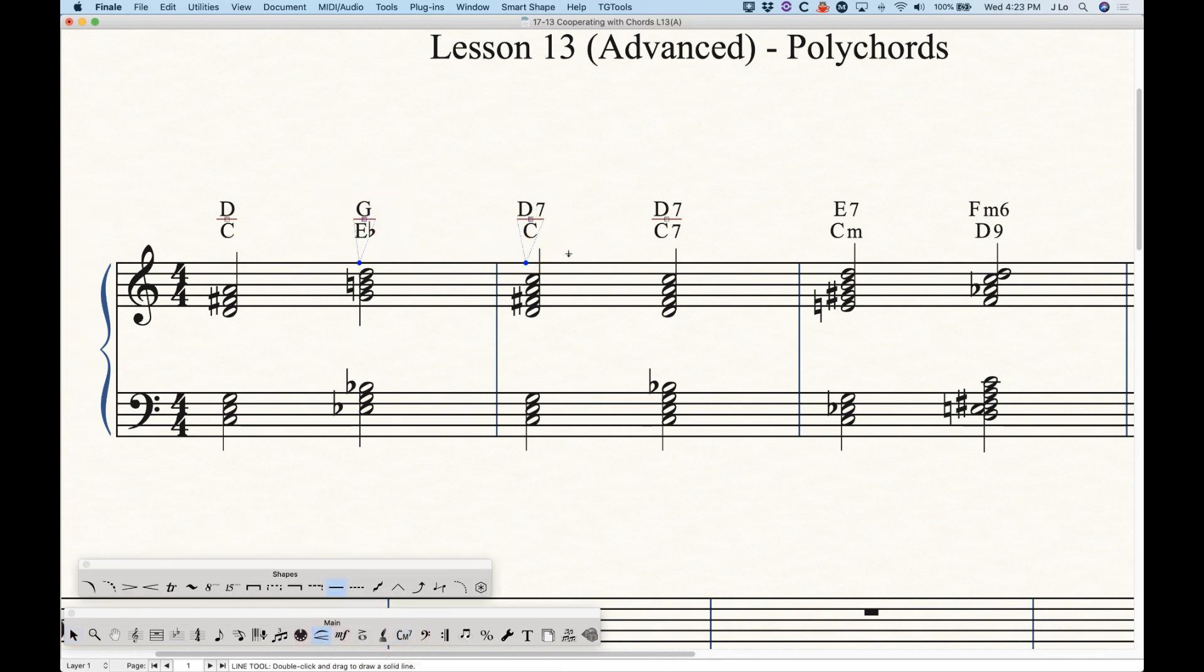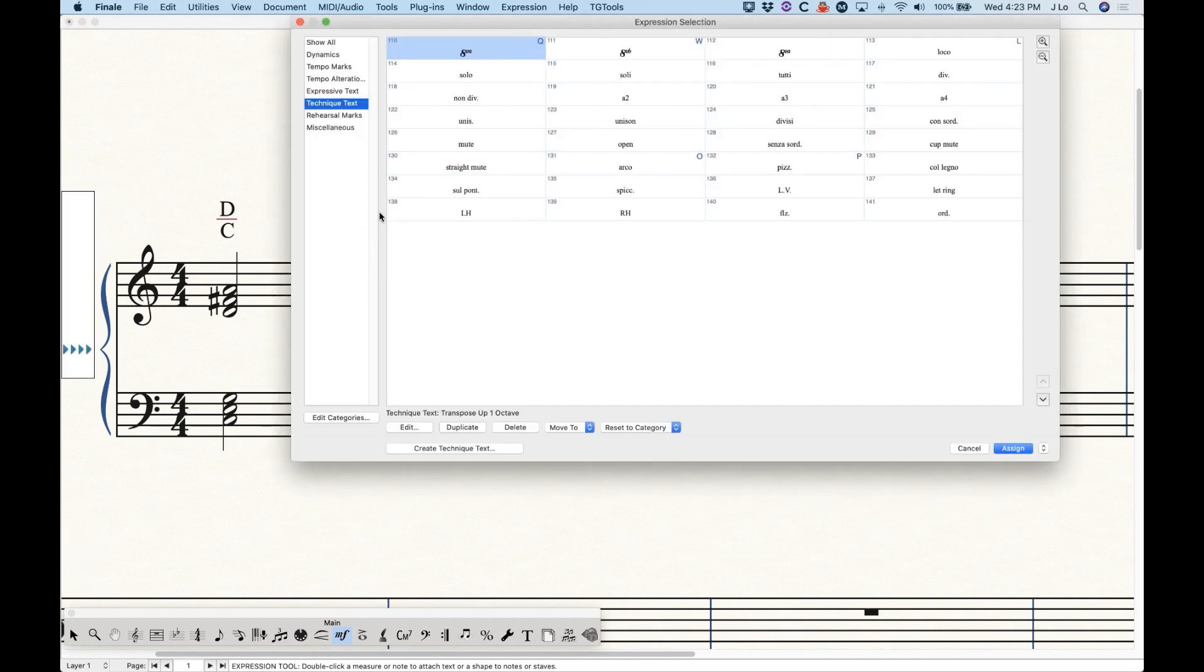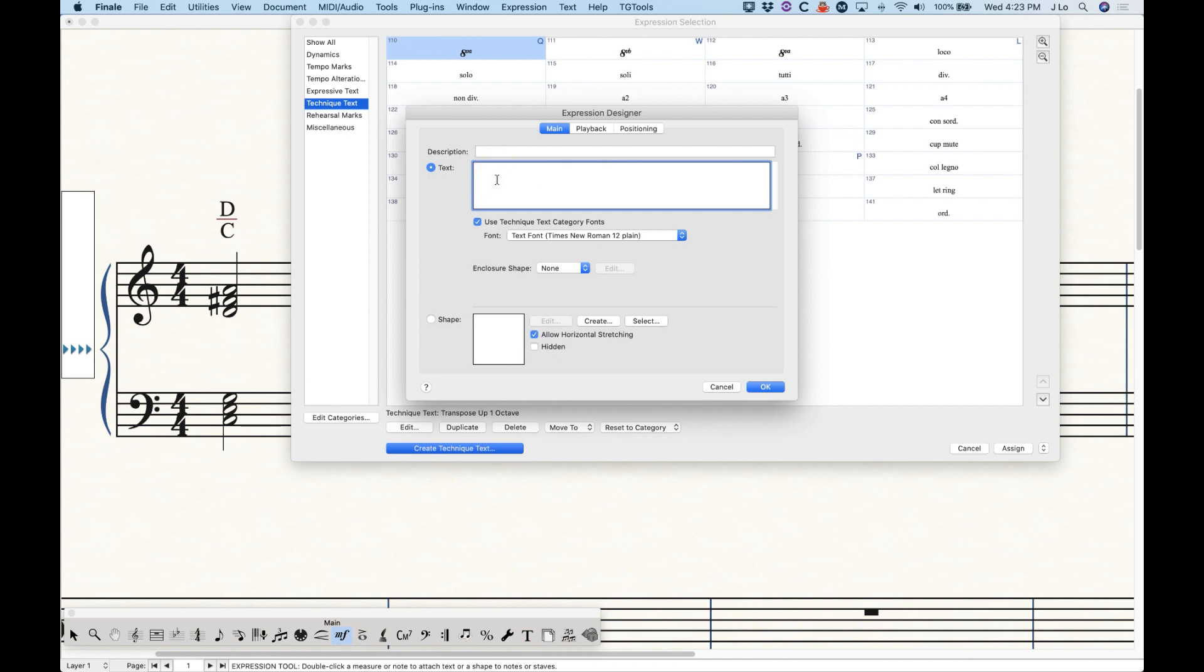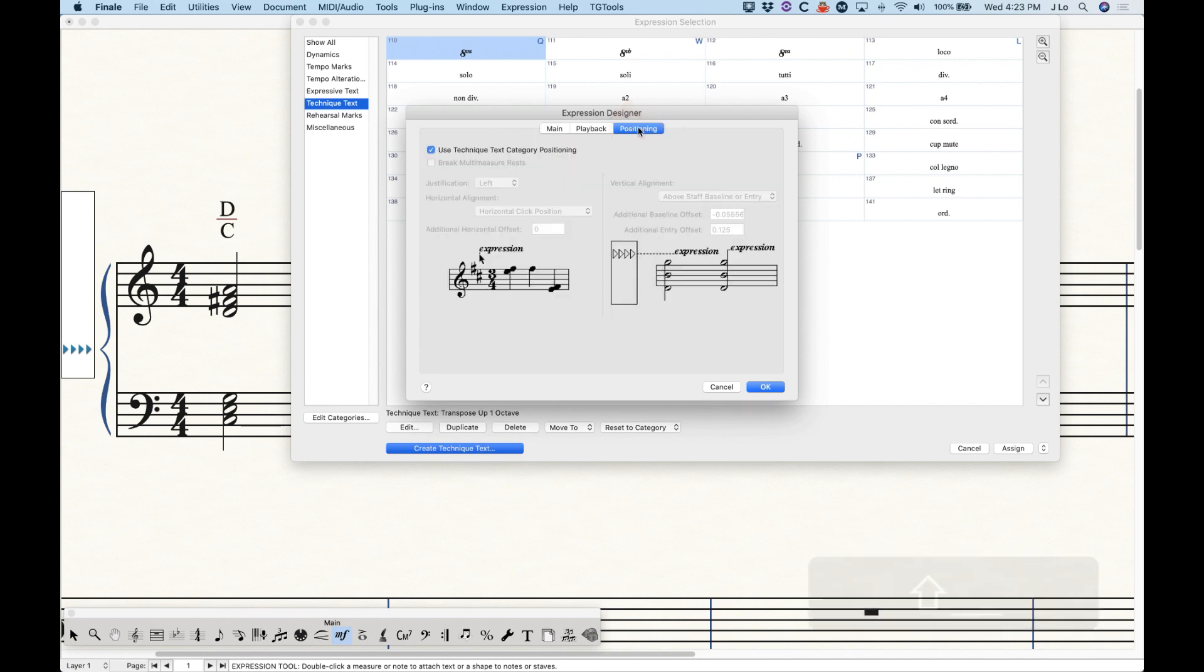The other way to do it is with an expression. The advantage of using an expression is that it's a little bit easier to nail down that positioning exactly. So the way I'm going to do this is I'm going to create a new technique text that's just going to be two underscore characters. And I'm going to make sure that my positioning is exactly where I need it to be. So I'm going to uncheck that use technique text category positioning. We want to center justify, we want to center of all note heads. And where it says vertical alignment, what we want to do is choose the staff reference line, this way we can pin the offset to the top line no matter what.